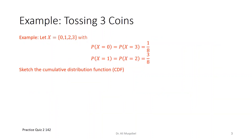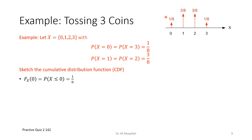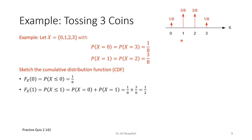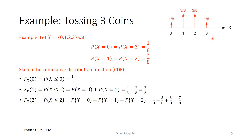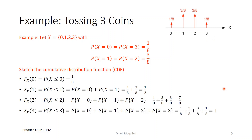Going with the example of tossing the coin three times and sketching the CDF: at 0 it equals 1/8. At 1, the CDF accumulates to 1/8 plus 3/8, which gives 1/2. At 2, it's 7/8. And at 3, it's 1.